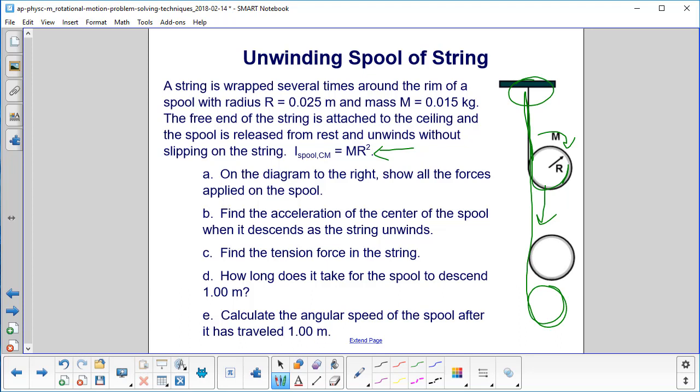Find the tension force in the string. Then how long does it take for the spool to descend one meter? So obviously there's at least one meter of thread on the spool. And then calculate the angular speed of the spool after it has traveled one meter.